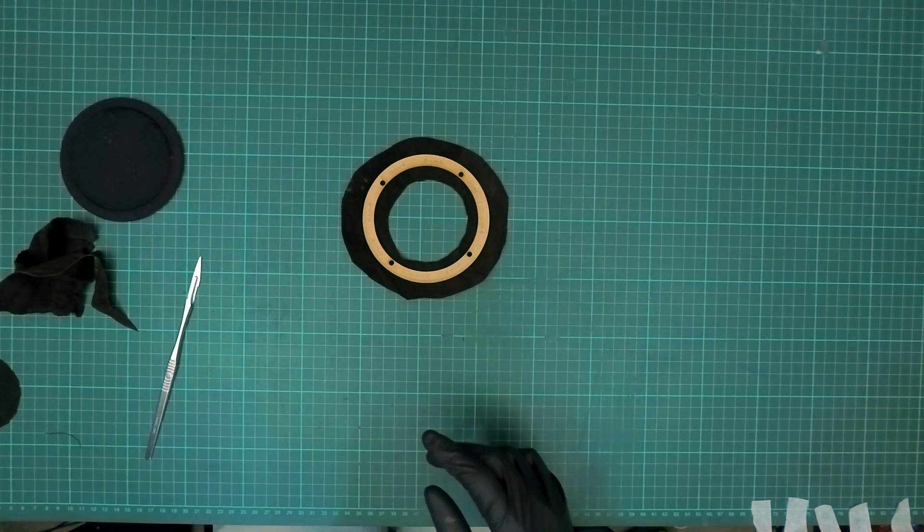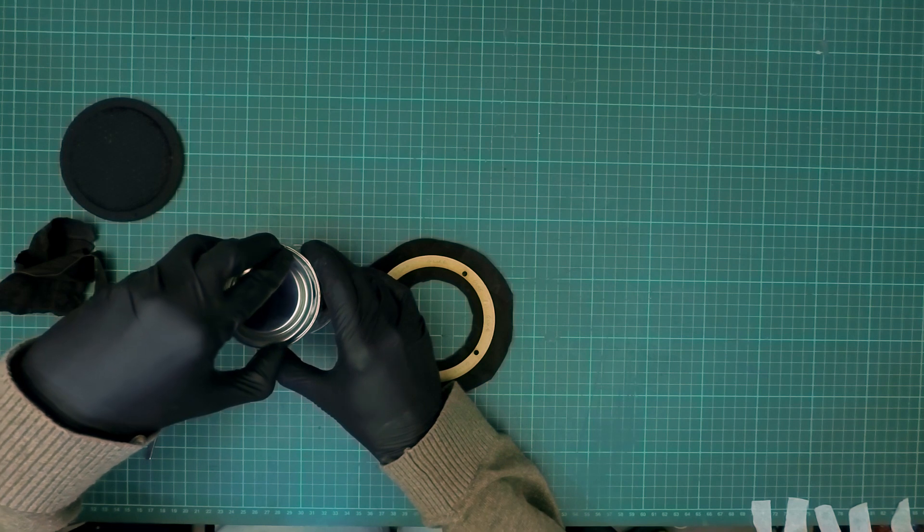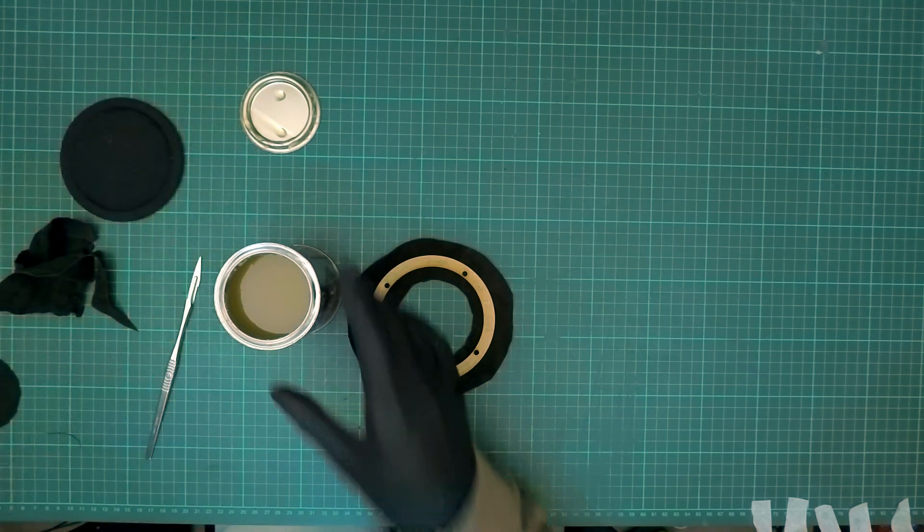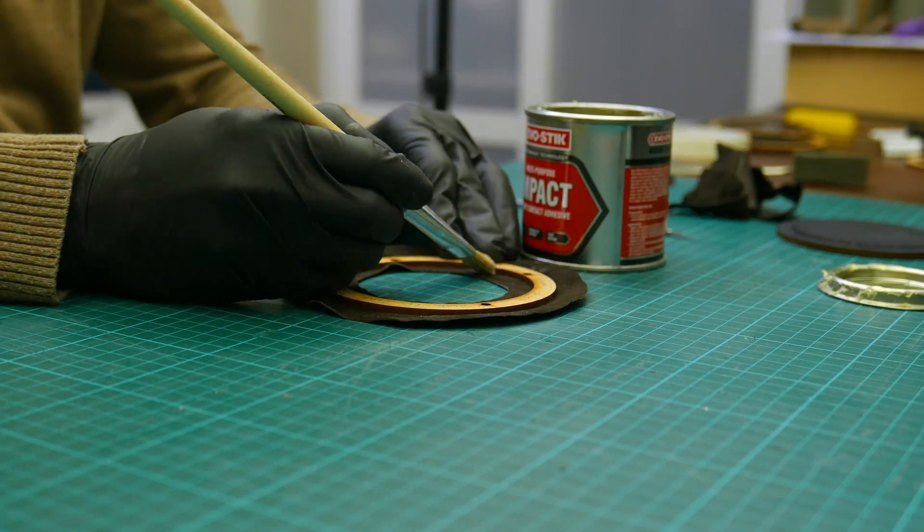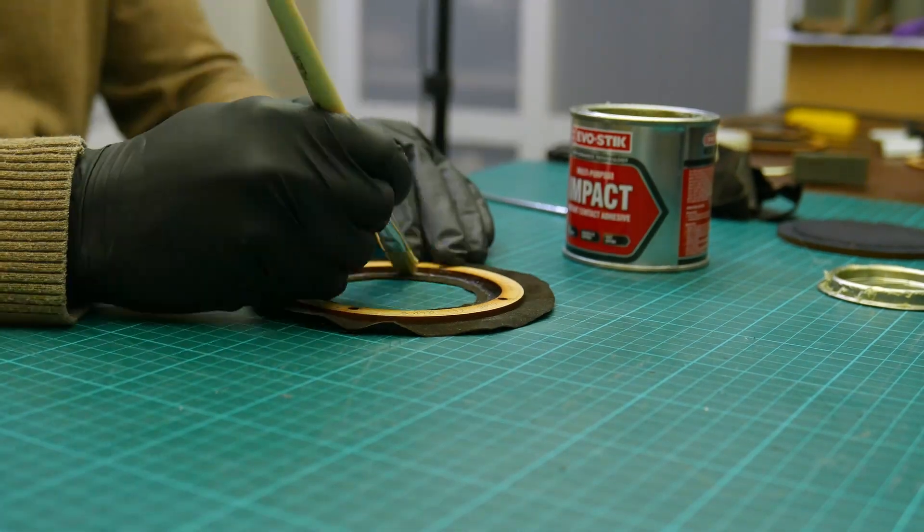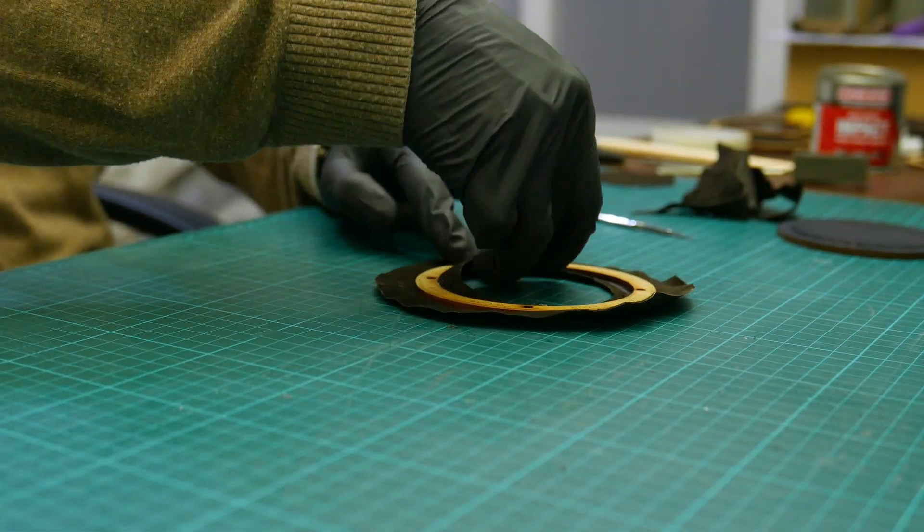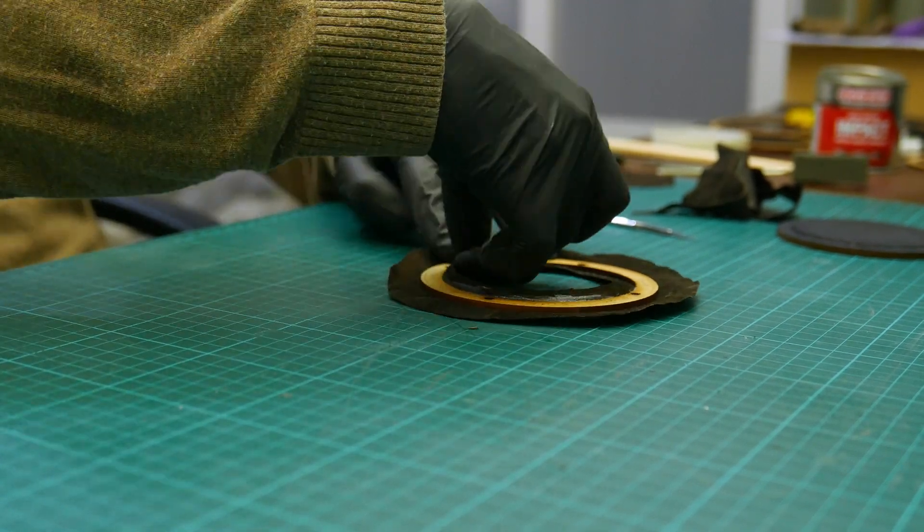We're going to use the contact cement again and apply it on both the leather and on the inner edge's surface to get a tight bond. The next step is to pull the leather and press it against the inner edge to create a tight bond.